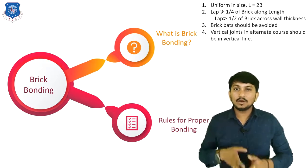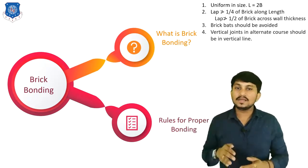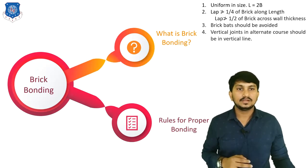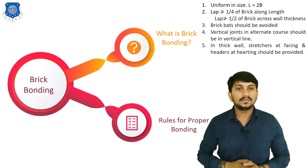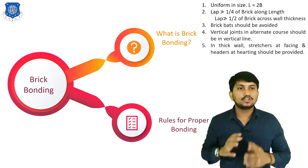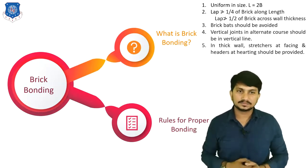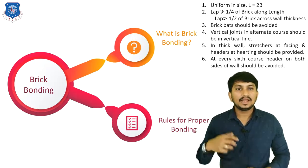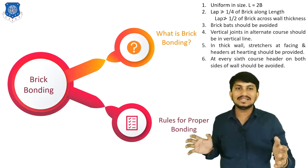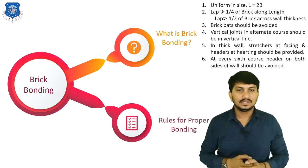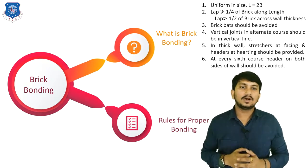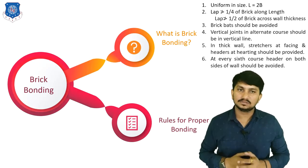Fourth rule: vertical joints in alternate courses or layers should not be in a vertical line. Fifth: in thick walls, stretchers at facing and headers at backing should be provided. At every sixth course, headers on both sides of the wall should be avoided. These six rules are used for proper bonding of brick masonry walls.